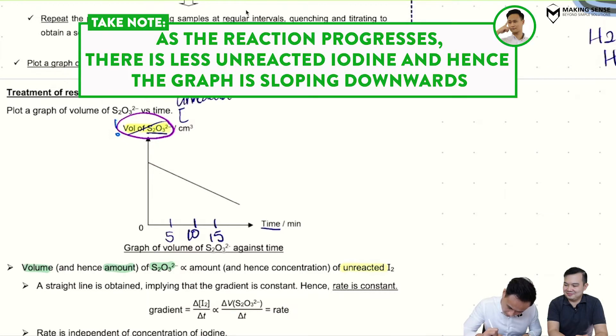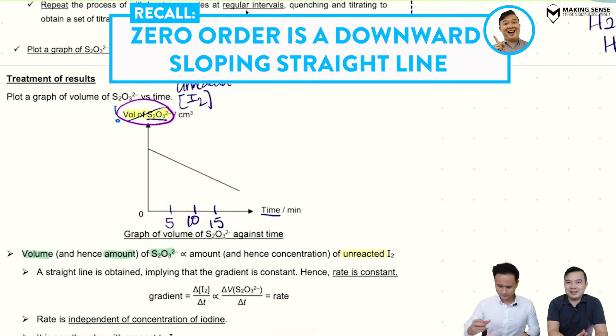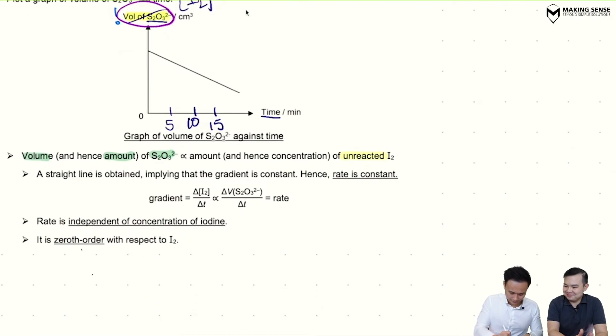And Mr. Leung, looking at this shape of this curve on this line, what order does it tell you? So if it's a downward-sloping straight line, it must be zero order with respect to I2. Exactly. So you can see here. Zero order with respect to I2. So this was a continuous method.